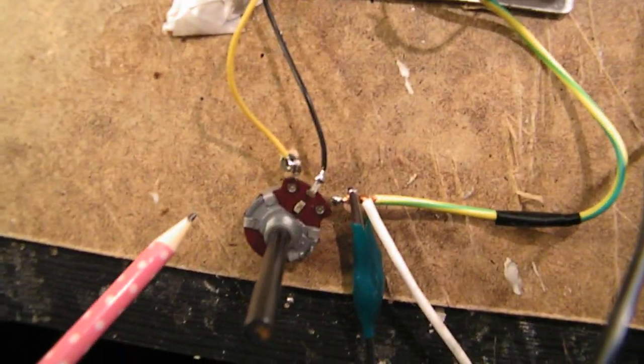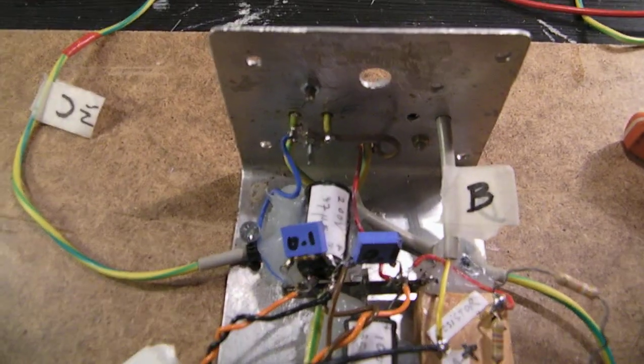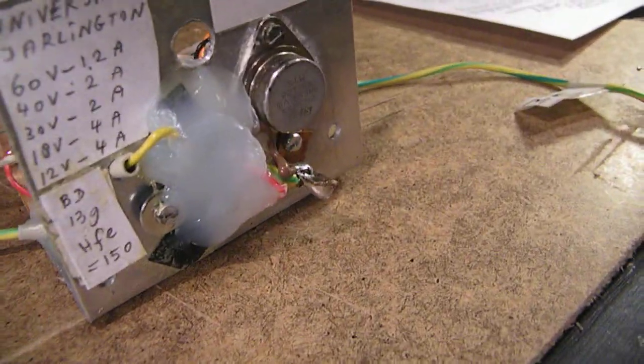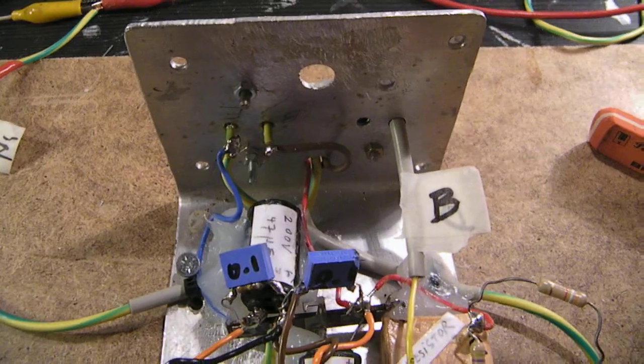Here is the 10K potentiometer connected to the two-transistor Darlington, BD139 and 2N3055, on a quite good heatsink. Not ideal, but it's good enough.